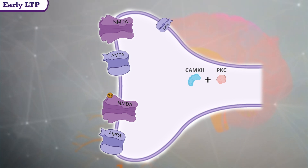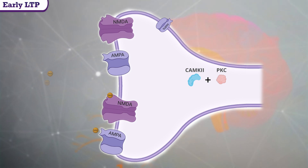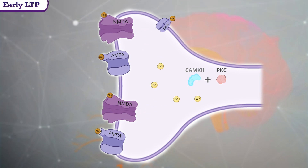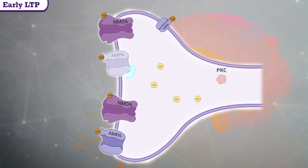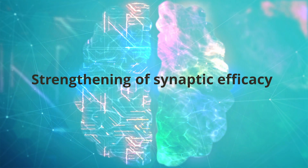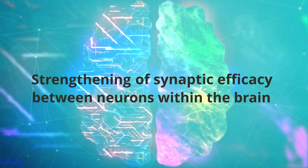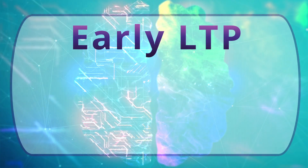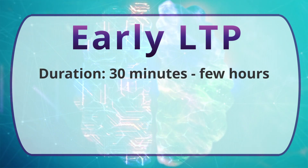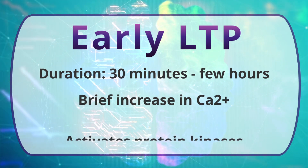CAMK2 has also been found to activate AMPA translocation. More receptors mean more binding sites available for glutamate to bind to, sensitizing the synapses to allow even more calcium ions in the next time. CAMK2 also phosphorylates AMPA receptors, hyperactivating them to make them work more efficiently at transferring sodium ions. These changes ultimately lead to changes in synaptic efficacy and strength. Early LTP synaptic changes, however, only last from around 30 minutes to a few hours and require brief increases of calcium ions and persistent activation of protein kinases.